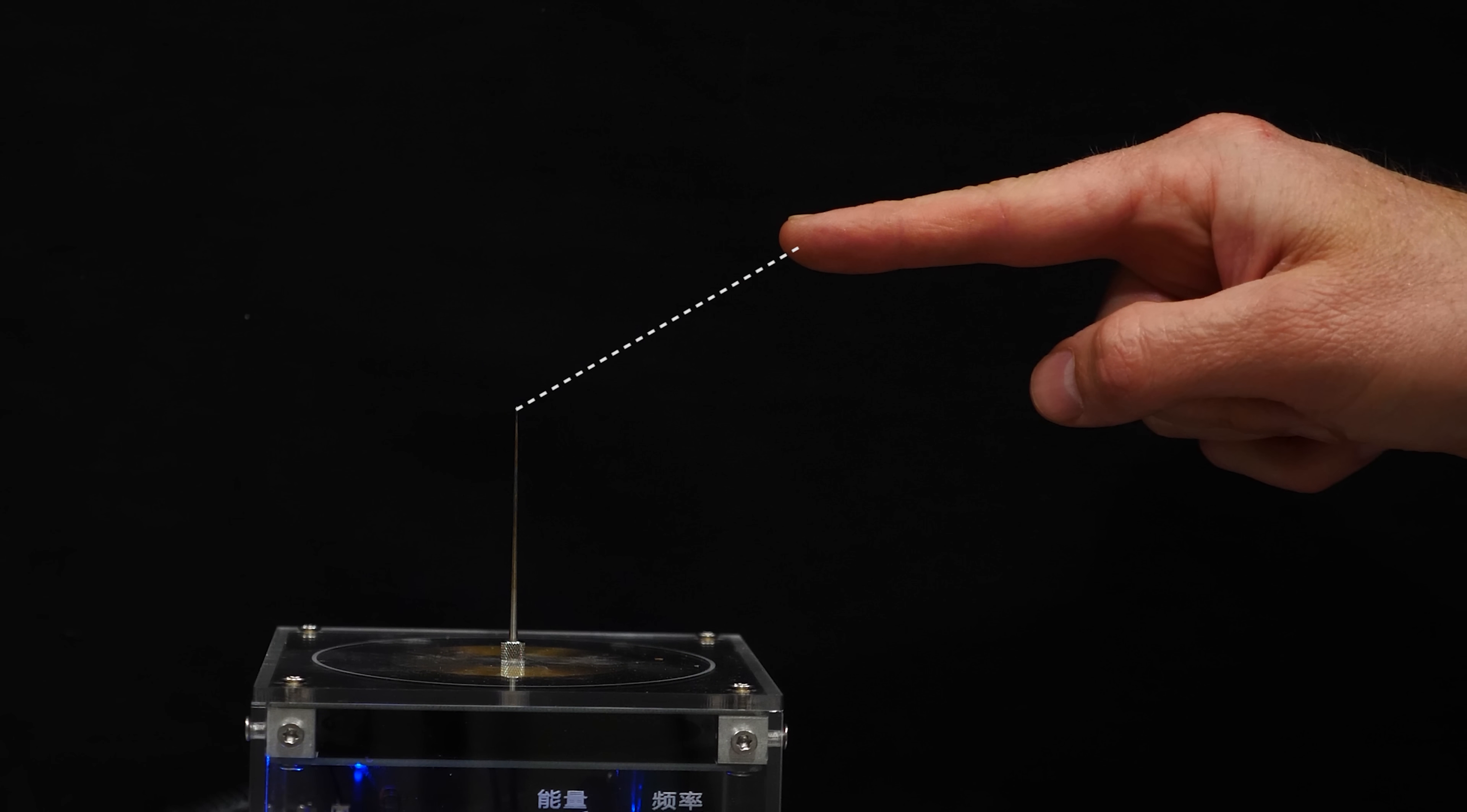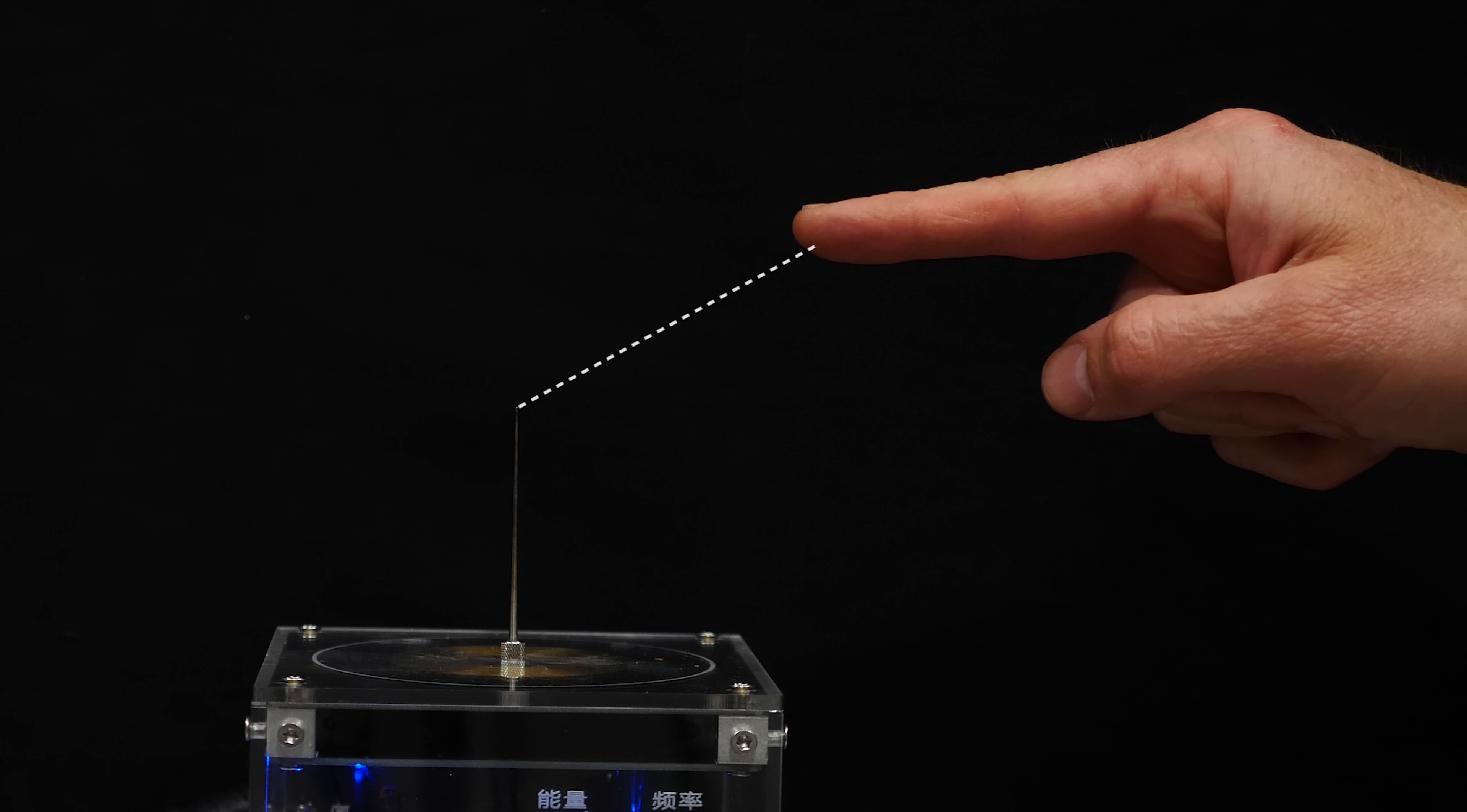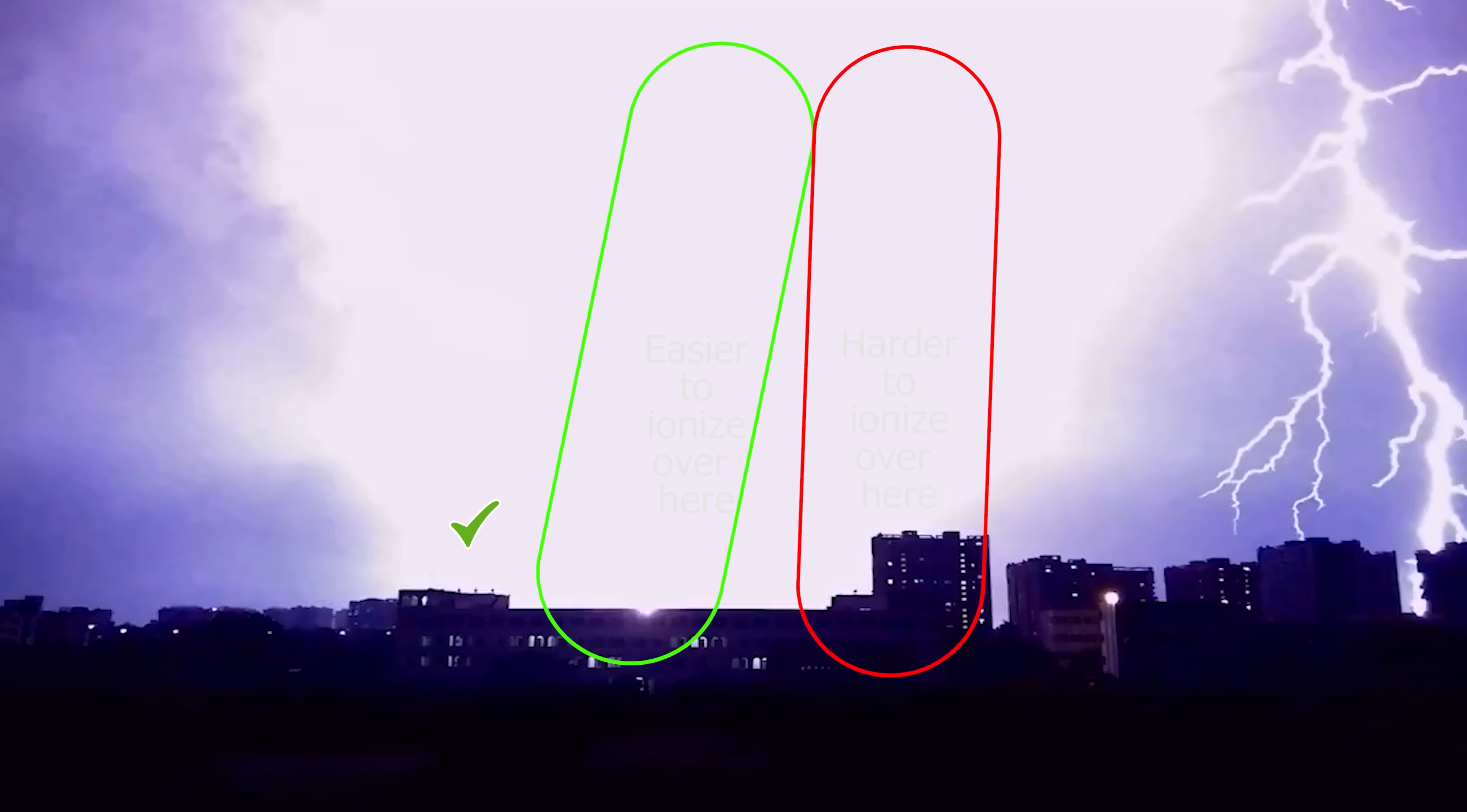This is because electric discharges don't just take the shortest path or even the path of least resistance. They take the path that's easiest to ionize. This can create some weird paths.